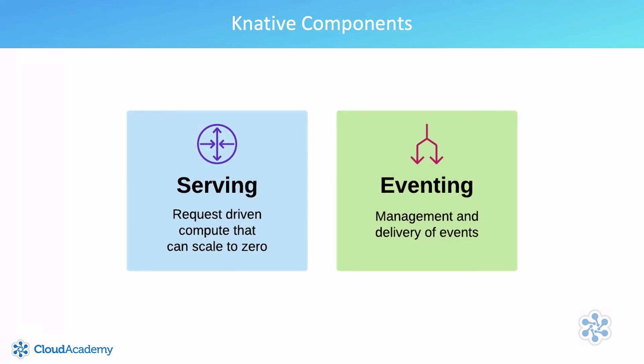Knative is composed of two distinct components: serving and eventing. These two components are most often installed together, but can be installed independently if required. Serving provides request-driven compute that can scale to zero, and eventing provides eventing and event-driven capabilities, encouraging asynchronous messaging flows.